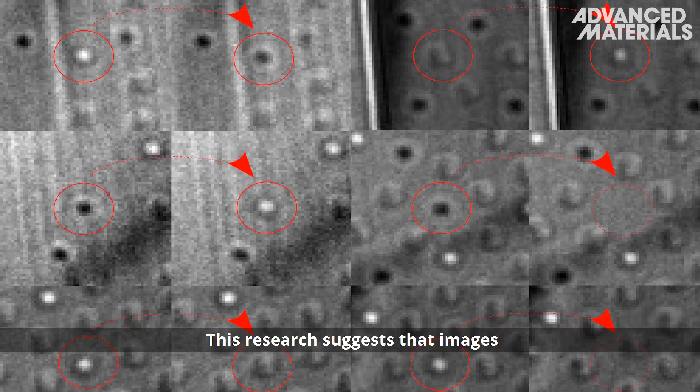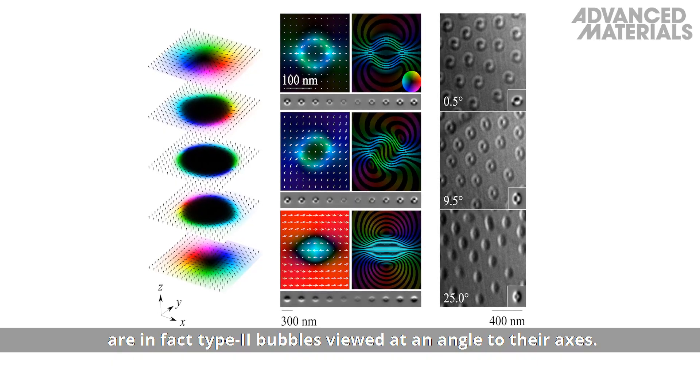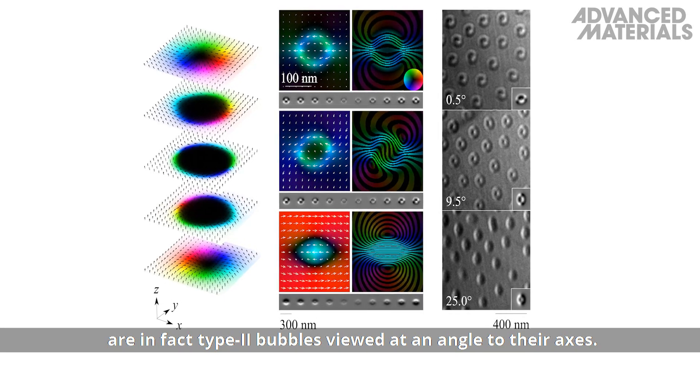This research suggests that images previously identified as biskyrmions are in fact type 2 bubbles, viewed at an angle to their axes.